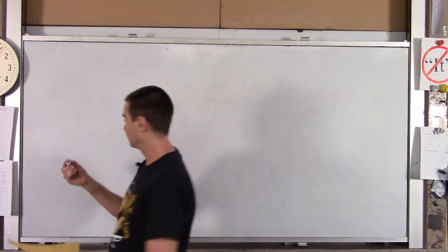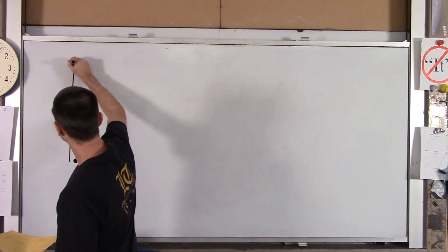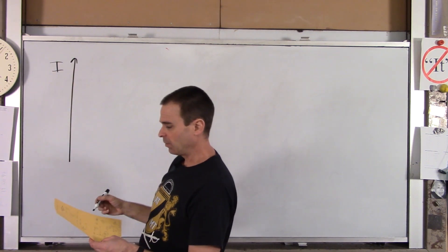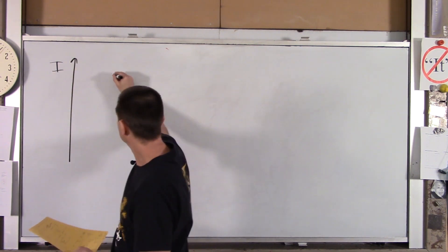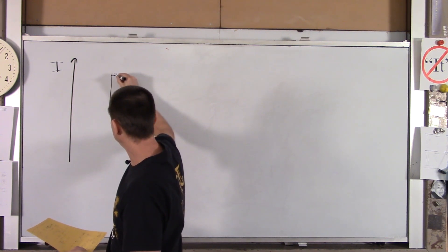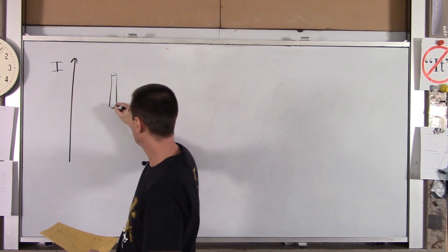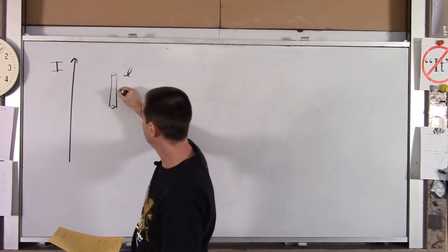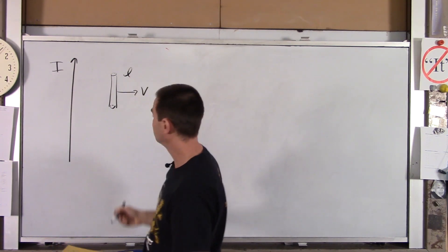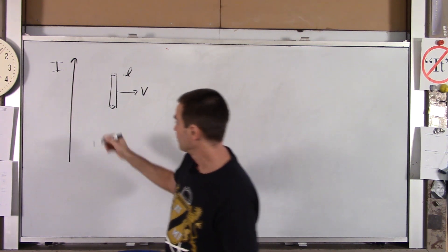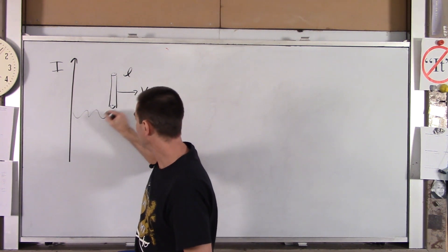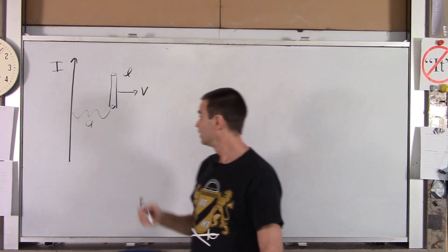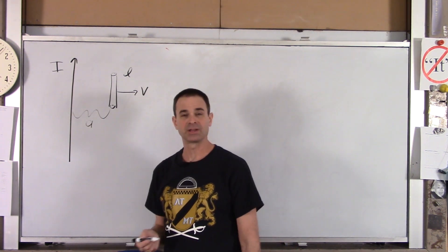So let me draw this out for you. Imagine you have a current carrying wire. Here it is. We'll say the current's going up. We'll call that I. And we have a little chunk of wire. In the first part of the example, we'll have that chunk of wire oriented this way. That chunk of wire has a length L, and it's moving with a velocity V away from the other wire. And we'll call this dimension A. At that moment, that's how far away the little chunk of wire is from our current carrying wire.